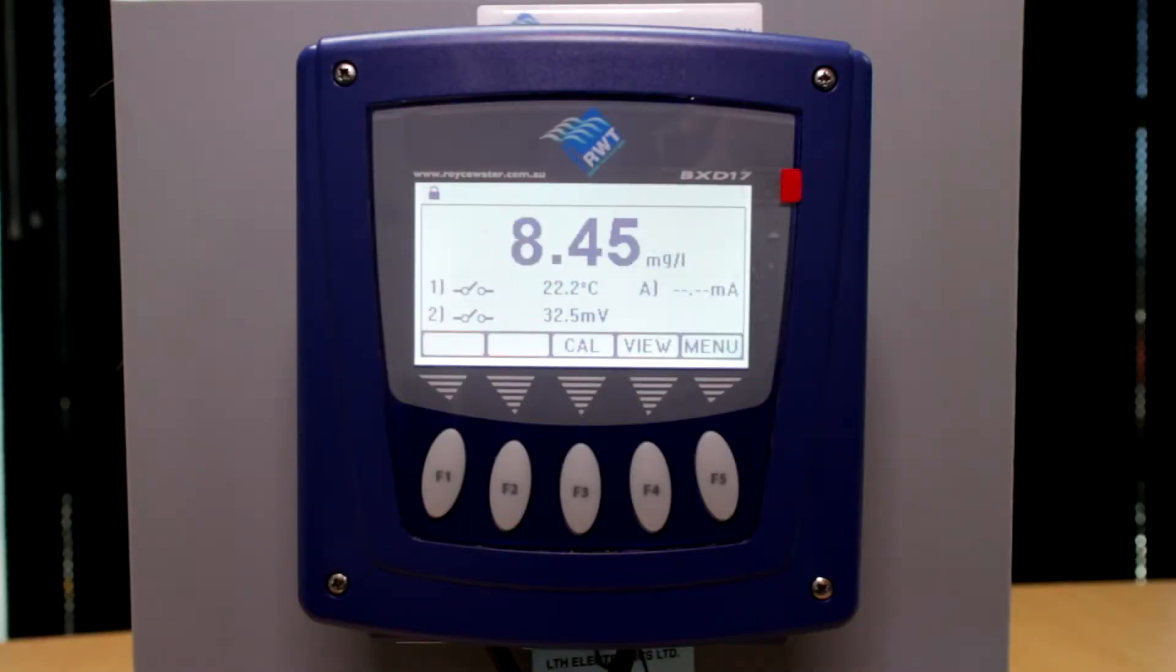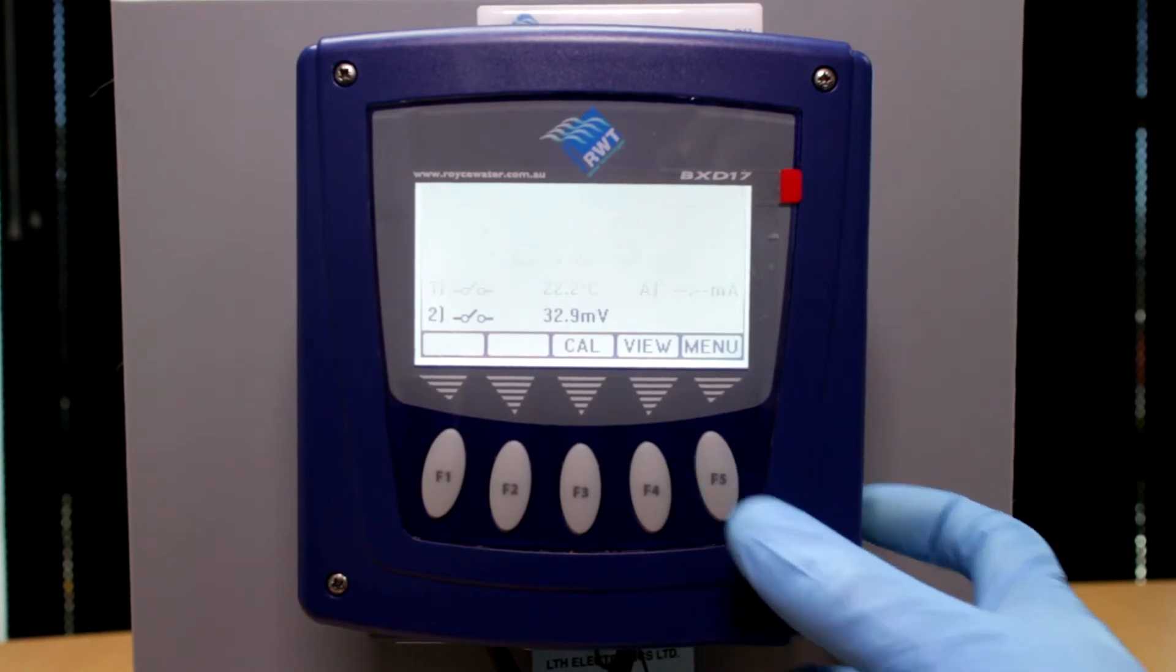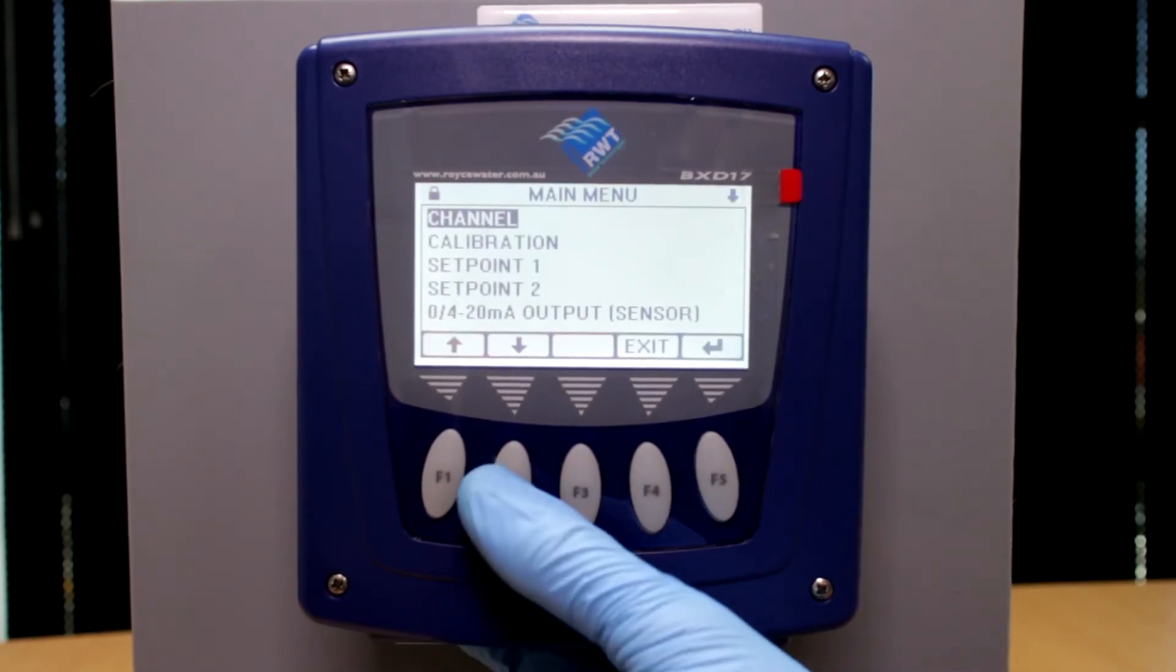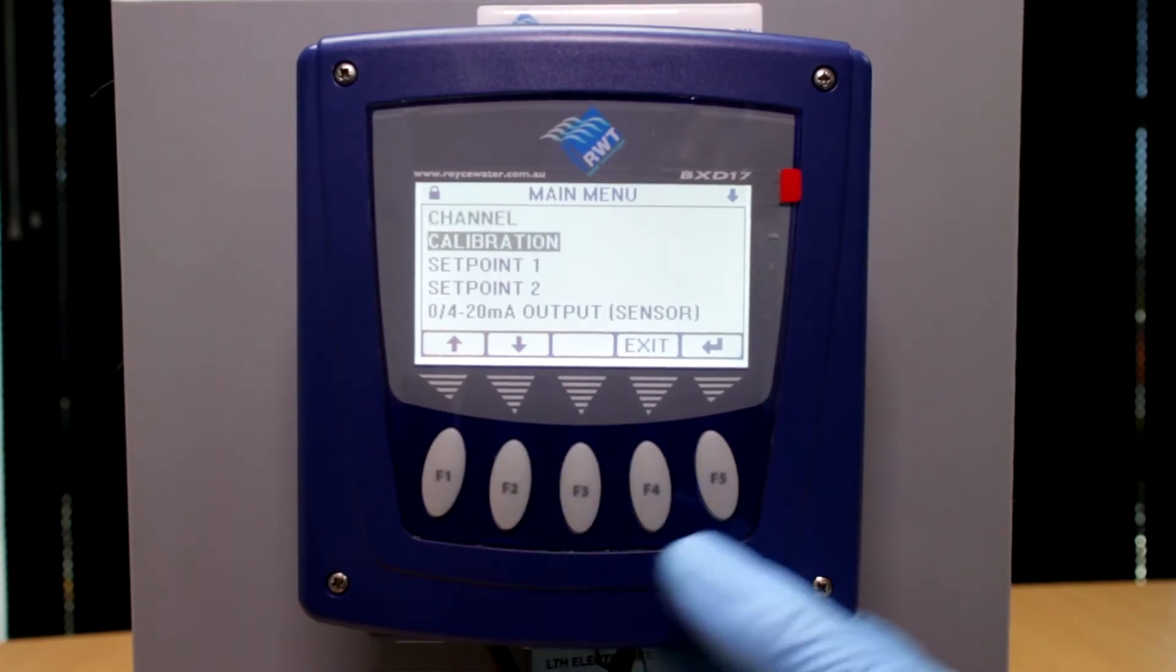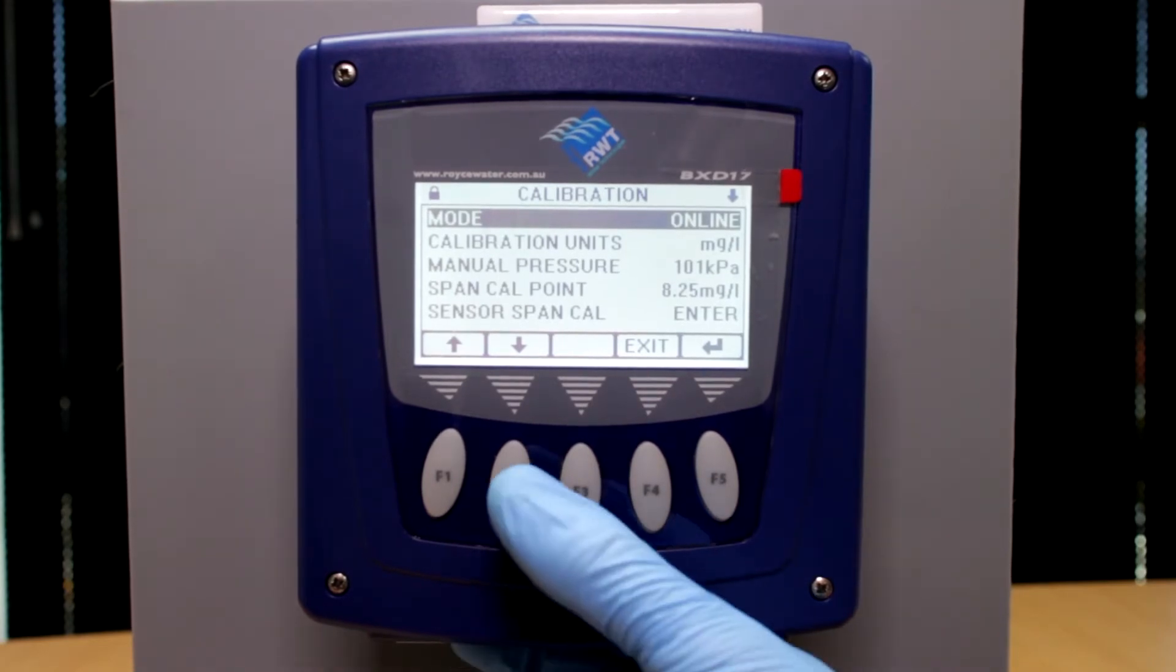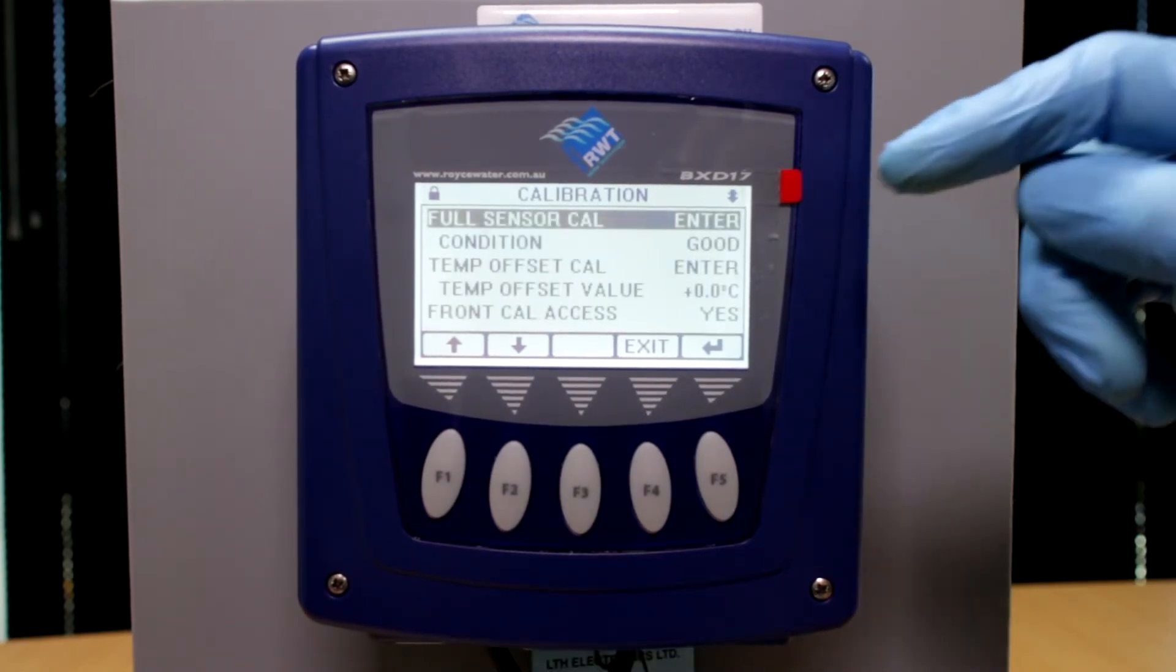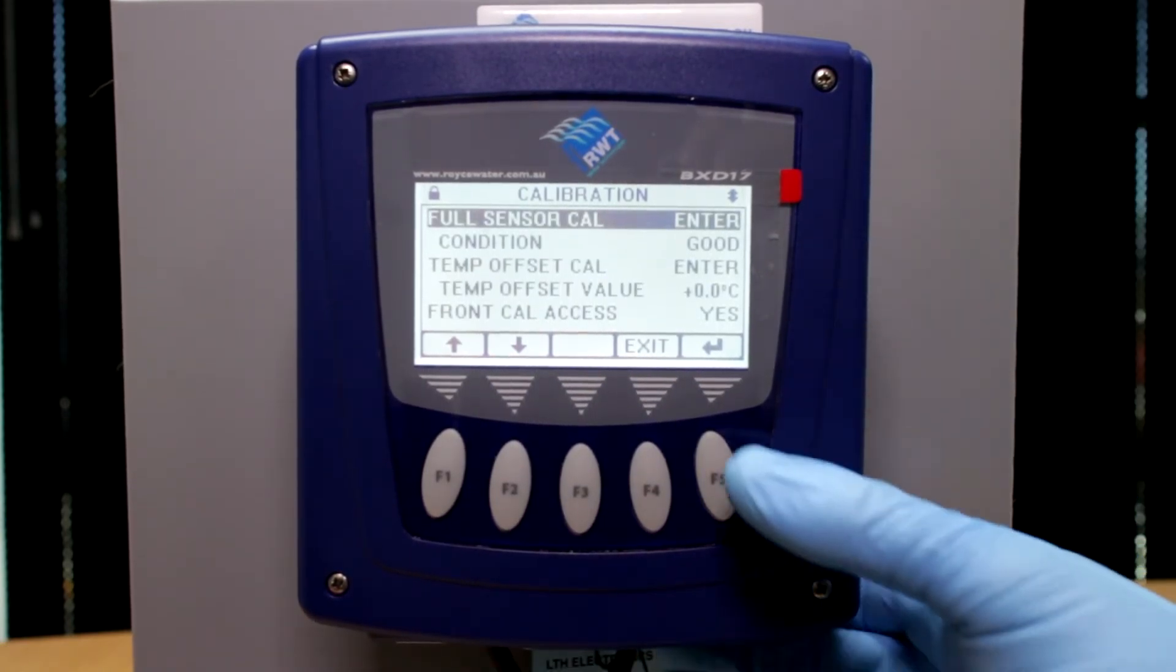Should you wish to calibrate zero on your Royce G95A dissolved oxygen sensor, we first prepare some zero DO solution. If you don't have access to zero DO solution, you can use RAS or WAS. Hit menu which is F5, and then scroll down to calibration using F2. Push enter, scroll right down using the F2 key until we get to full sensor calibration and push enter.